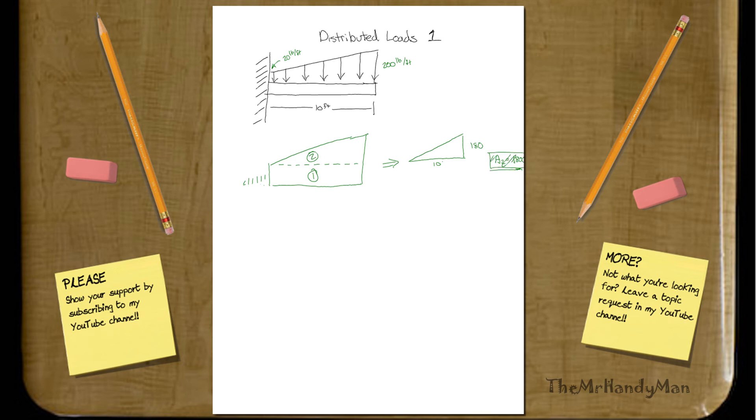1,800 divided by 2. It will be 1,800 divided by 2, so your area 2 will equal 900 pounds. Good thing, that's why you look at your work and you check it.